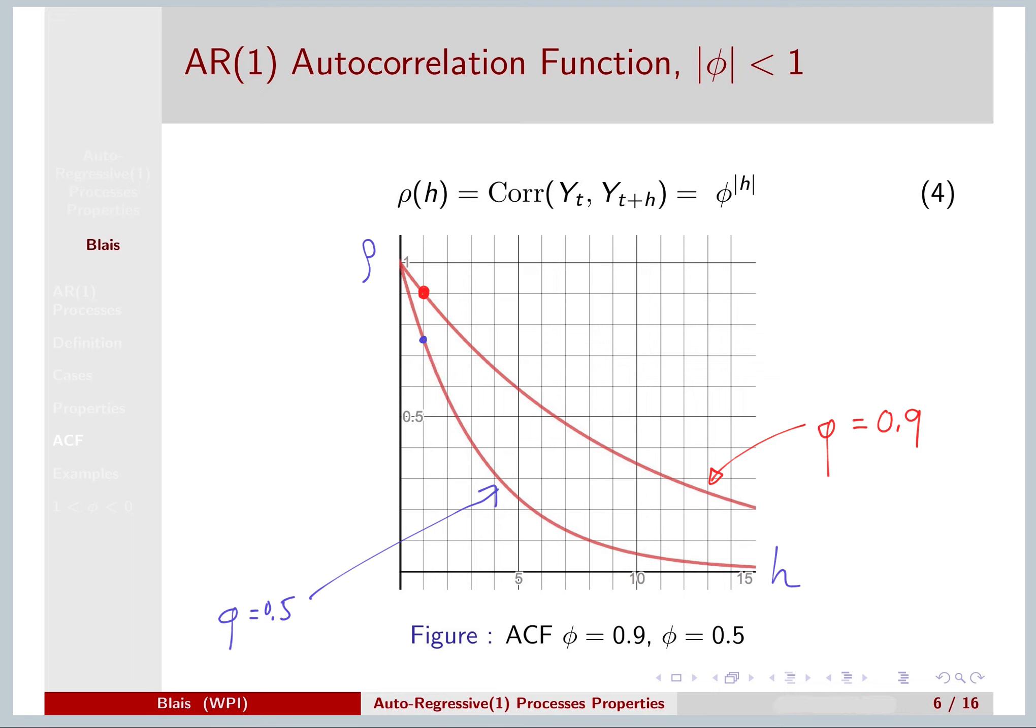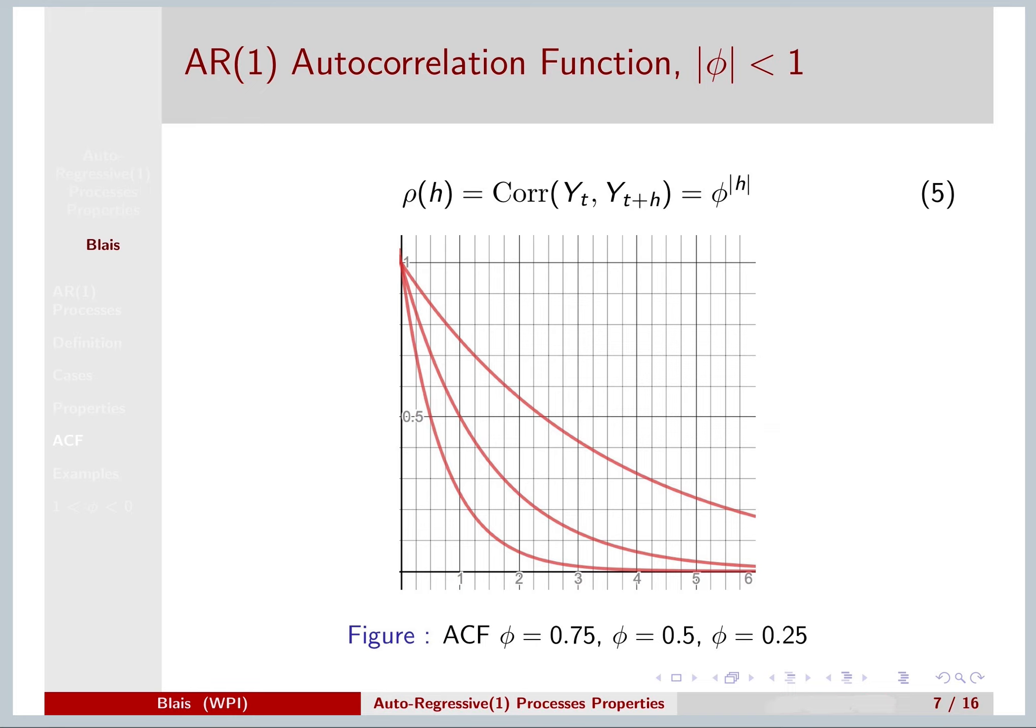Some more examples where you see even more dramatic drop-offs. Here we have a phi of 0.75. This one is 0.5. And then we have the lowest curve is 0.25. But notice your H here, the largest value for the H-axis is actually 6. And you see that with these lower values for phi, we're dropping off much more quickly.